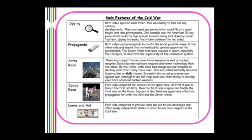The Soviet Union used success in sport, especially the Olympics, to illustrate the superiority of the communist system. The arms race was a really key one — there was competition in both conventional and nuclear weapons, with each side wanting more and newer technology than the other. By the 1960s, both sides had enough nuclear weapons to destroy each other many times over. This is called Mutually Assured Destruction, or MAD. In reality, this acted as a deterrent against war, though it didn't stop each side from developing even more advanced nuclear weapons.